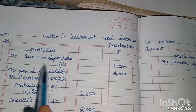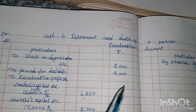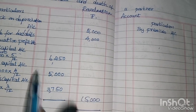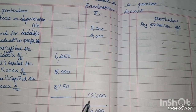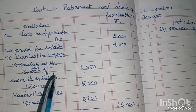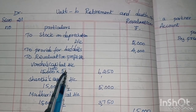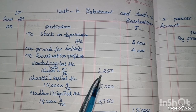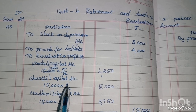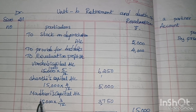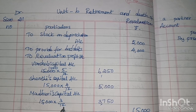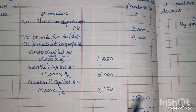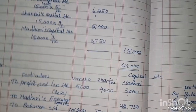Stock depreciation is ₹5,000; provision for bad debts is ₹4,000. The premises appreciation gives ₹24,000. So revaluation profit = ₹24,000 minus ₹5,000 minus ₹4,000 = ₹15,000. The revaluation profit of ₹15,000 is distributed among the three partners: Partner 1 gets ₹15,000 × 5/12 = ₹6,250; Partner 2 gets ₹15,000 × 4/12 = ₹5,000; Partner 3 gets ₹15,000 × 3/12 = ₹3,750. Total: ₹6,250 + ₹5,000 + ₹3,750 = ₹15,000.